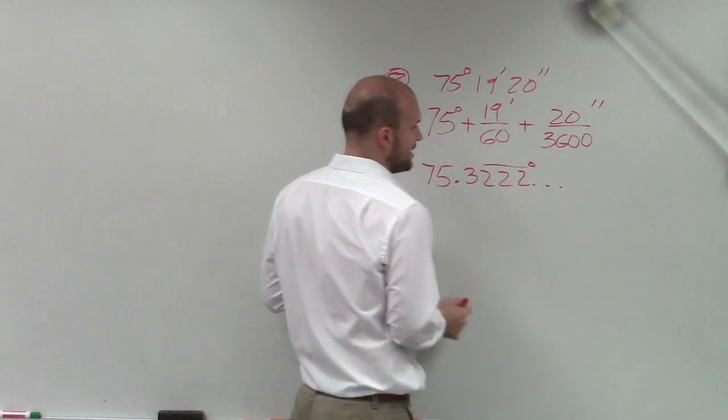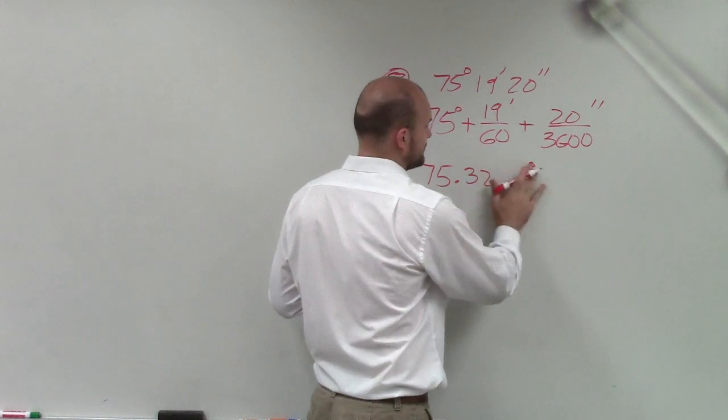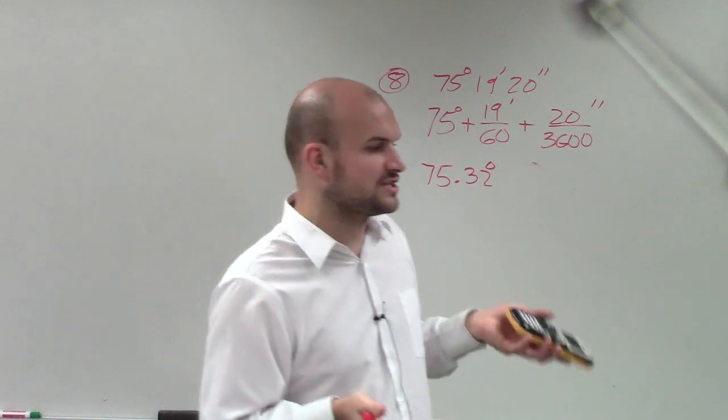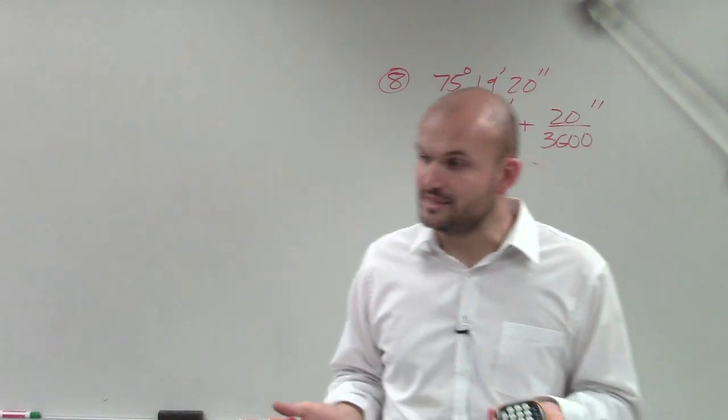Remember, this isn't a degree, right? So let's just round this to 75.322. I need to convert this to degree—I'm sorry, we need to convert this to radian. How do we convert a degree to a radian?